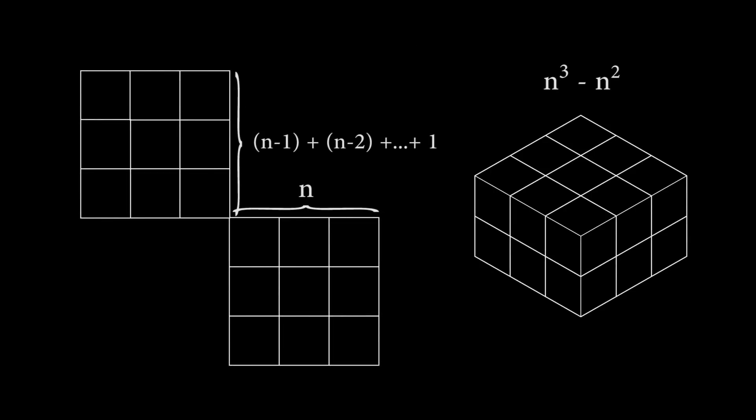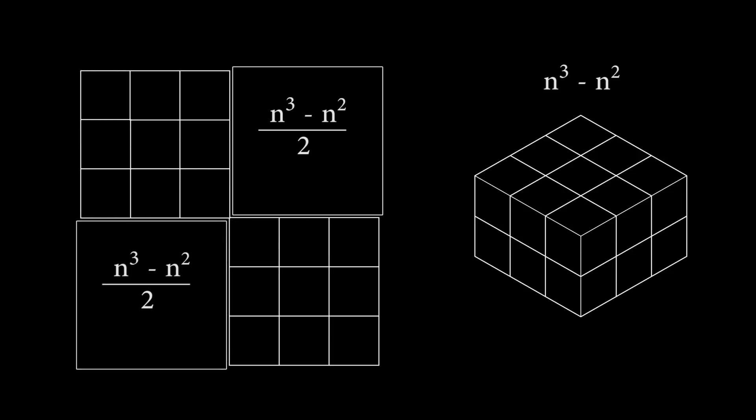And now where we had previously written a summation for the n minus 1th triangle number, we can replace it with the formula we just found, replacing n with n minus 1. Multiply this by n, and we get n cubed minus n squared over 2. And since there are two of them, this simplifies to just n cubed minus n squared.